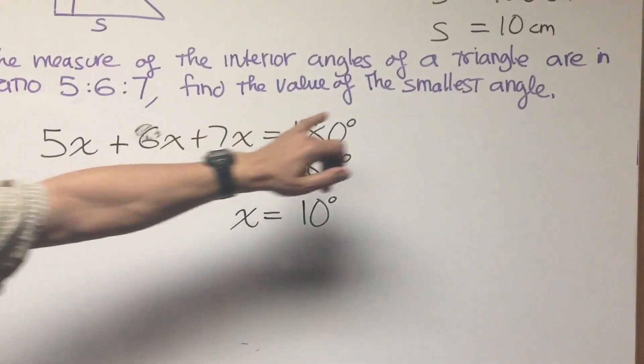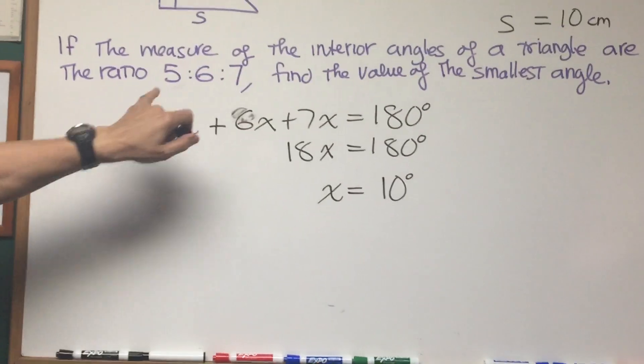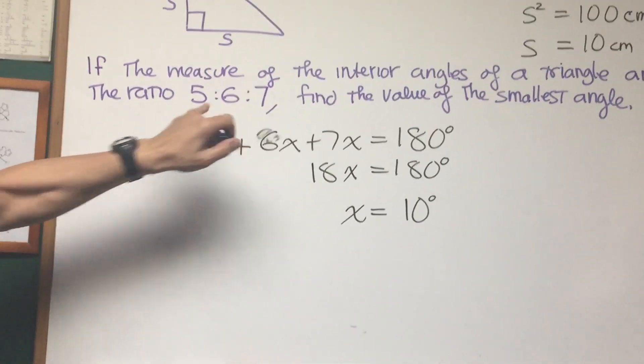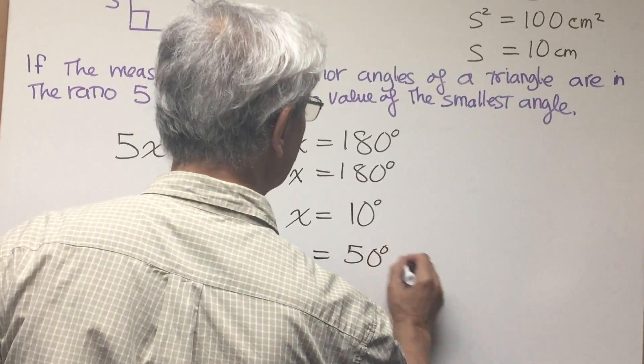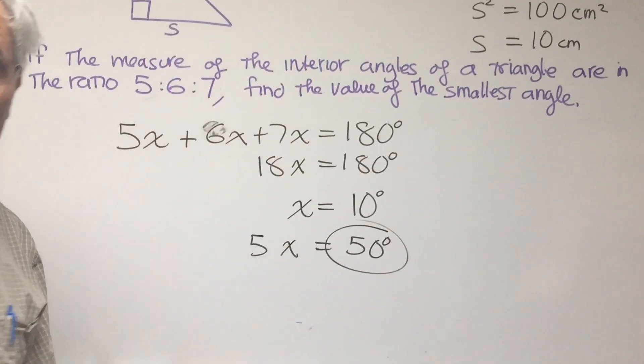The question is find the value of the smallest angle. That would be the angle associated with five or 5x. So 5x is equal to 50 degrees, and there's our answer.